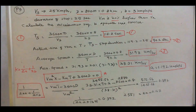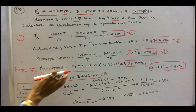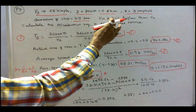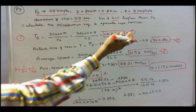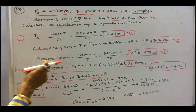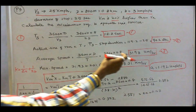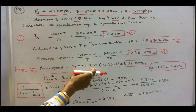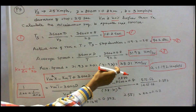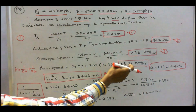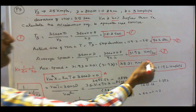Step 4: find the maximum speed. Maximum speed is 20 percent higher than the average speed. Average speed is 31.93, so vm equals 31.93 plus 20 percent of 31.93, which equals 38.31 km per hour.